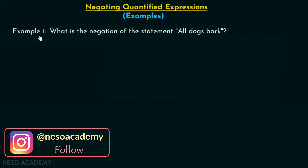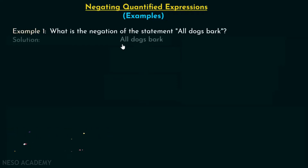Here is example number one: what is the negation of the statement 'all dogs bark'? We need to find the negation of this particular statement. We will follow a procedure for this. The first step is to convert this sentence into its equivalent quantified expression.